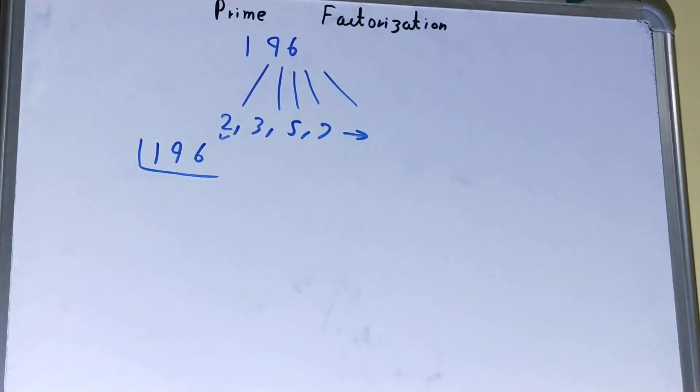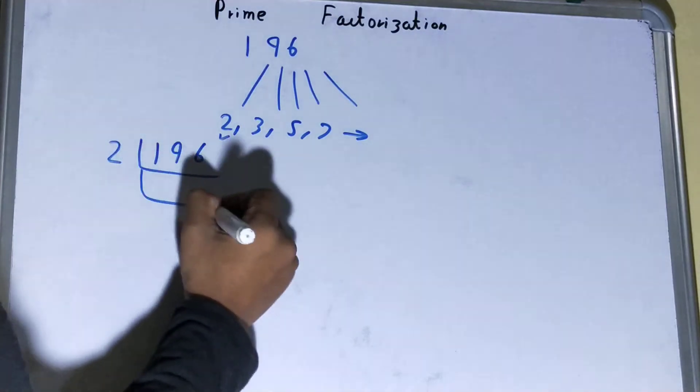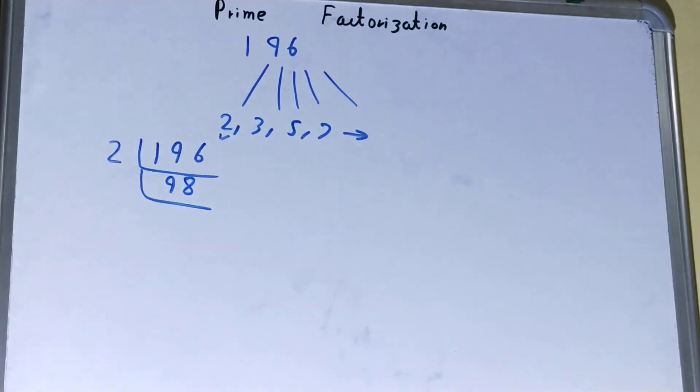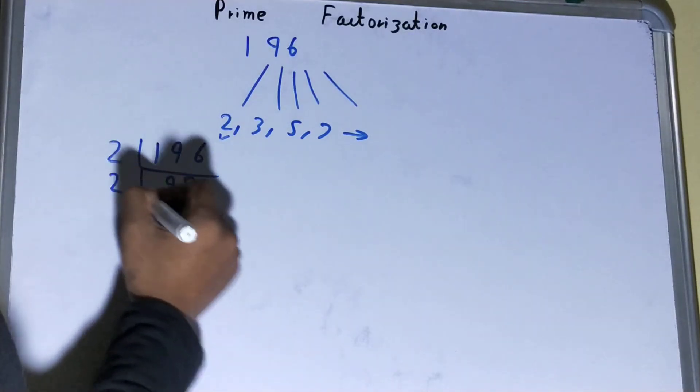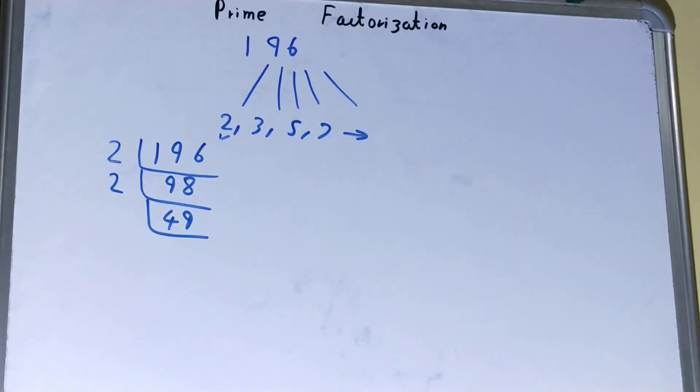Is 196 divided by 2? Yes, so we'll divide. We'll be left with 98. Again, same process. Is 98 divided by 2? Yes, so we'll divide. We'll be left with 49.